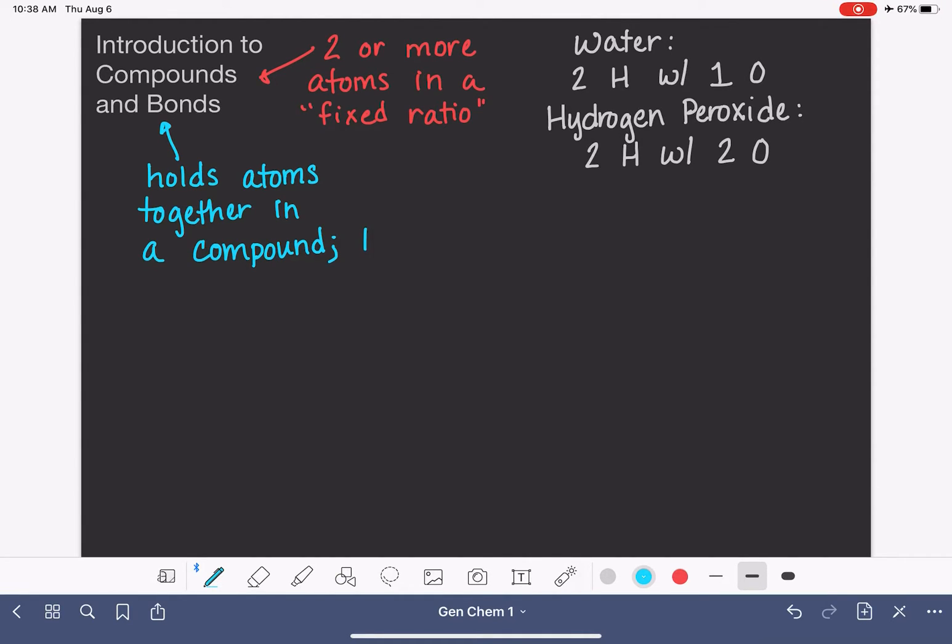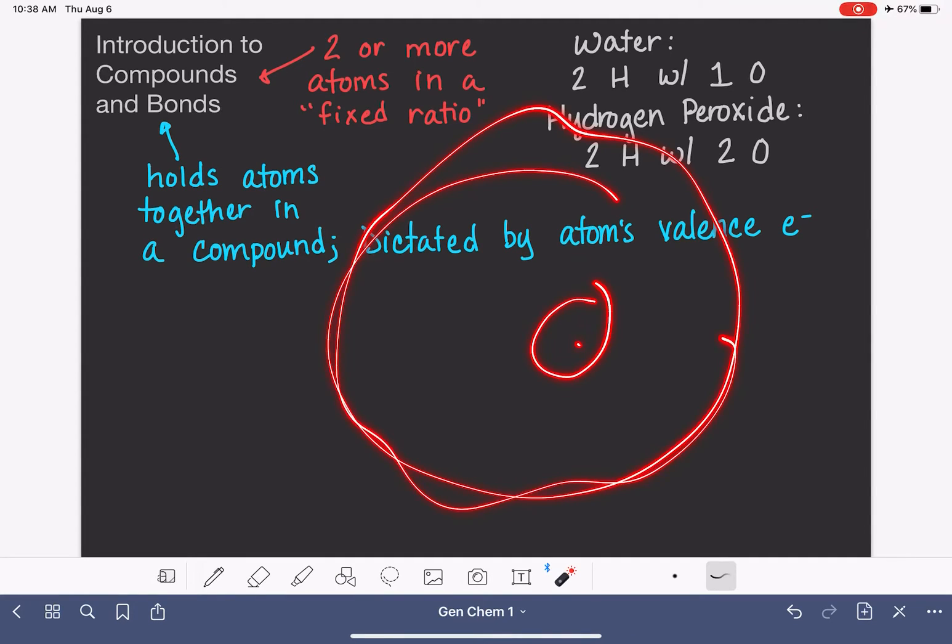Bonding is dictated or controlled by each atom's valence electrons. We've looked at valence electrons for a while now. We've defined the valence electrons. These are the electrons that are in the highest energy level or they are in the outermost energy level for an atom.